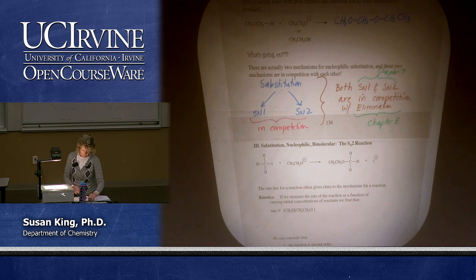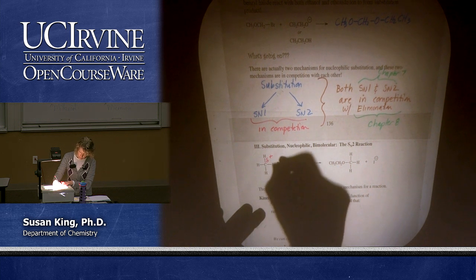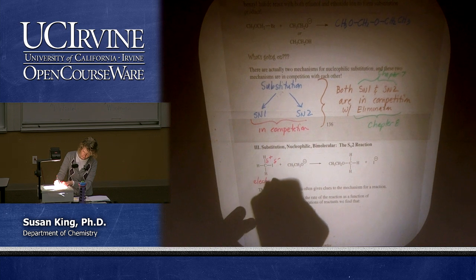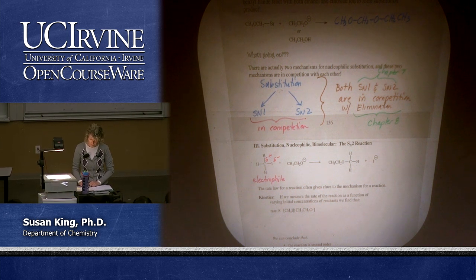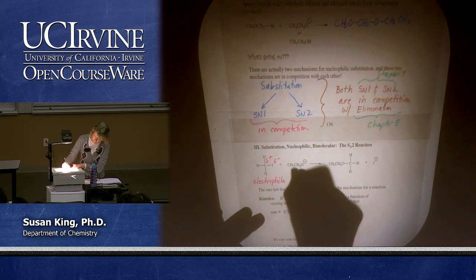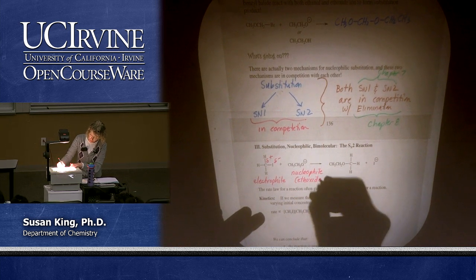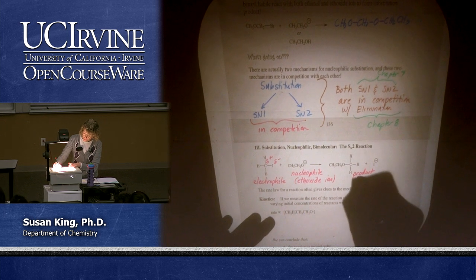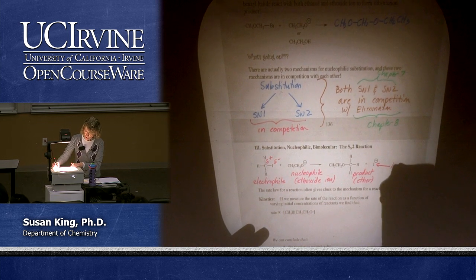Let's review the reaction type. This is a substitution. We have this polarized carbon-iodine bond. The halogen pulls electron density away from the carbon, which polarizes the bond: partial negative charge on the iodine, partial positive charge on the carbon — and of course this is our electrophile. Our nucleophile here is ethoxide, which we're going to be using for this particular example. Our product is an ether, and iodide is our leaving group.